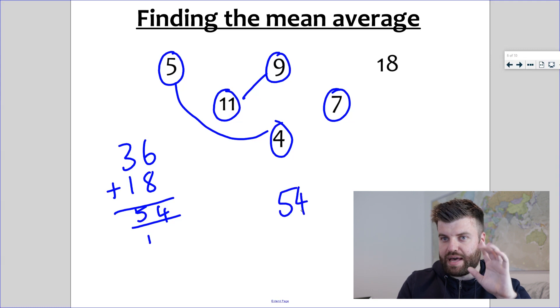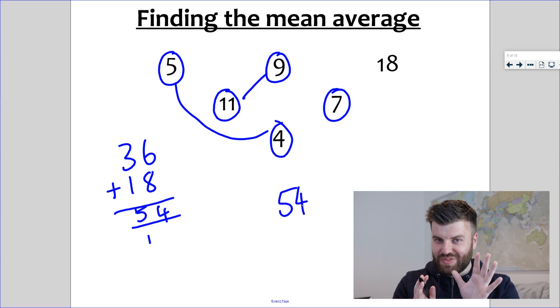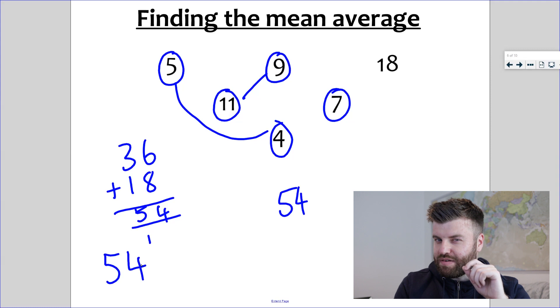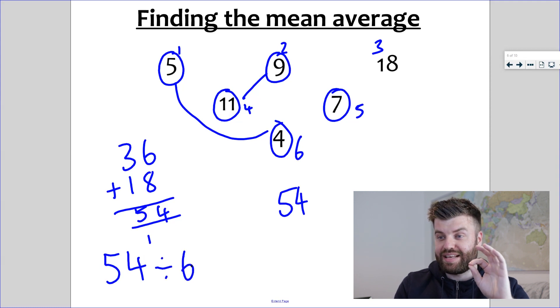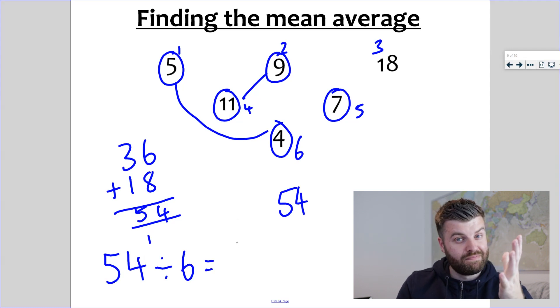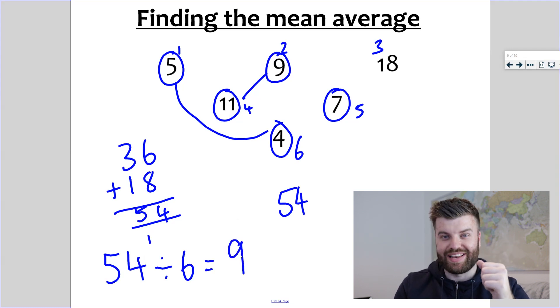But beware, that is not the mean. We've only done one step. Now that we've got 54, I'm going to write it down here. Hopefully you can remember our final step. I'm going to count up how many pieces of data I had: one, two, three, four, five, six pieces of data. So I know for my final step to calculate the mean average, I divide by six. Again, hopefully you know your times table facts. How many sixes are in 54? The answer is nine. The mean average for this set of data is nine.